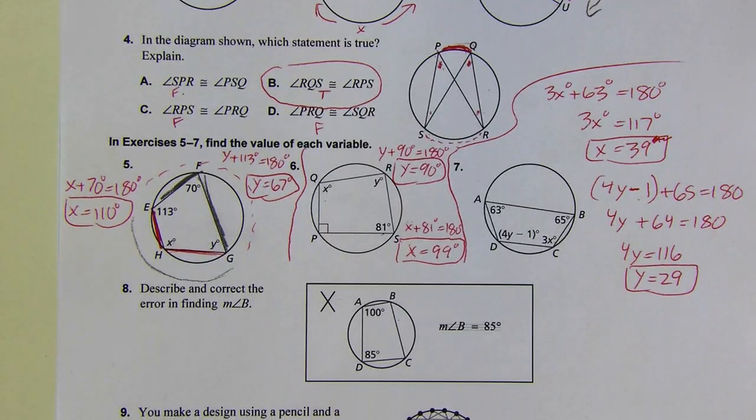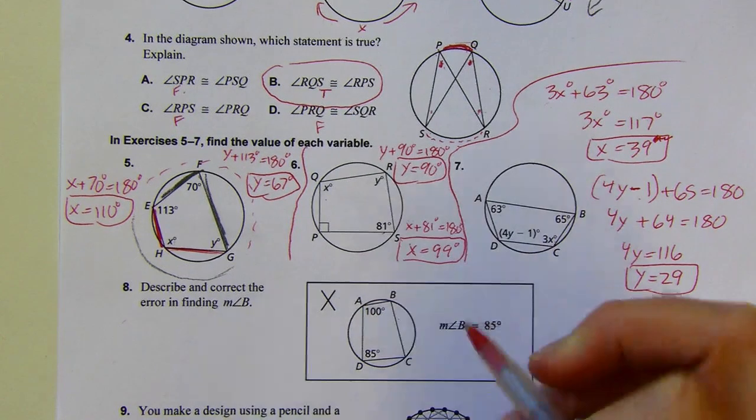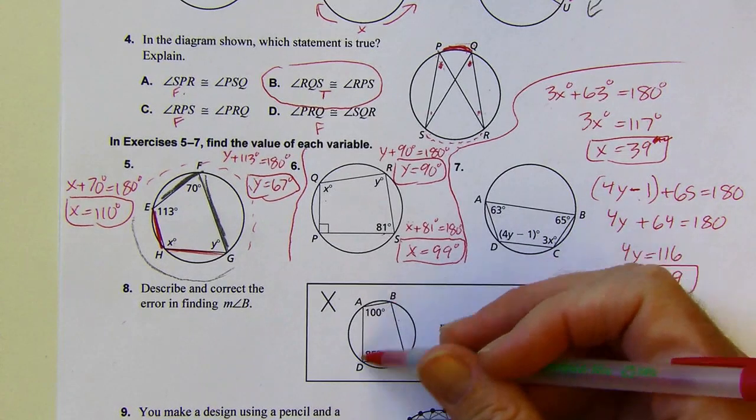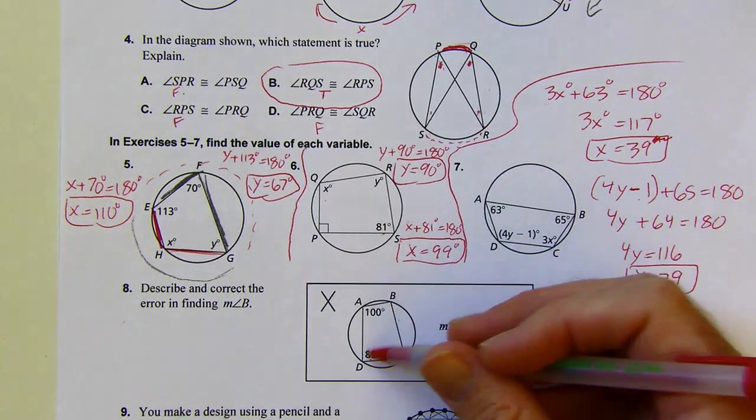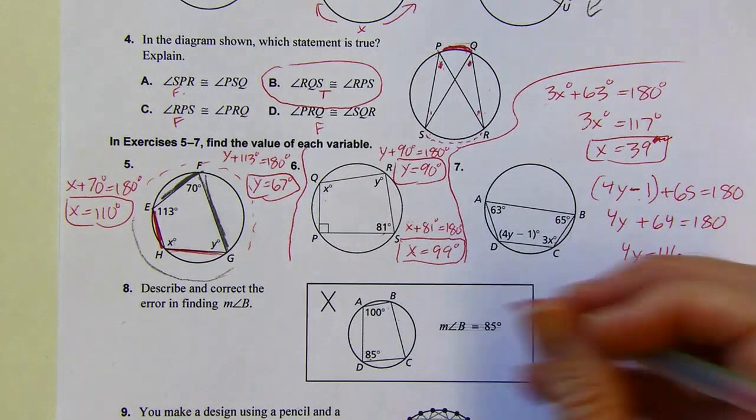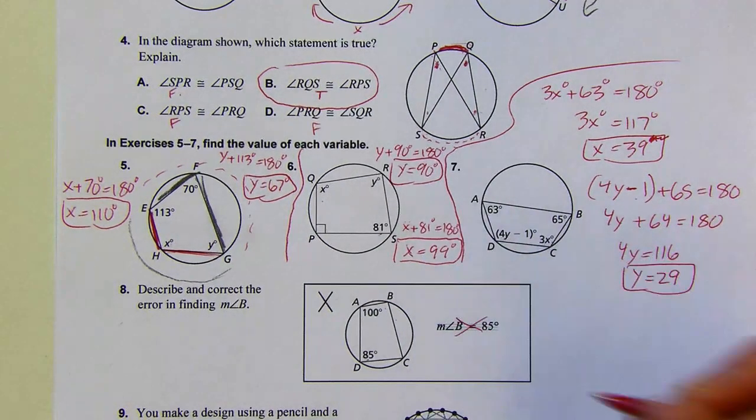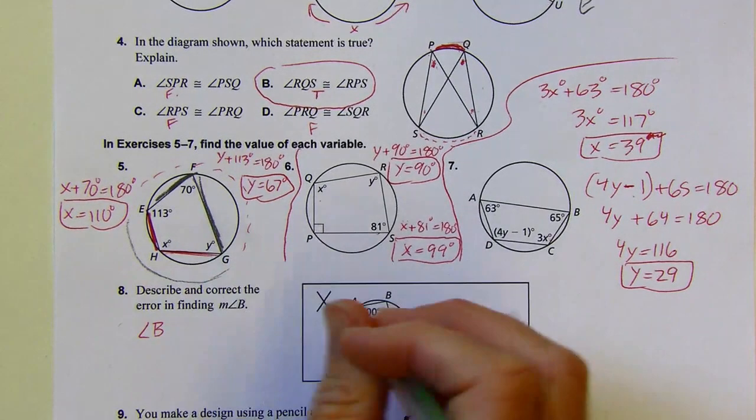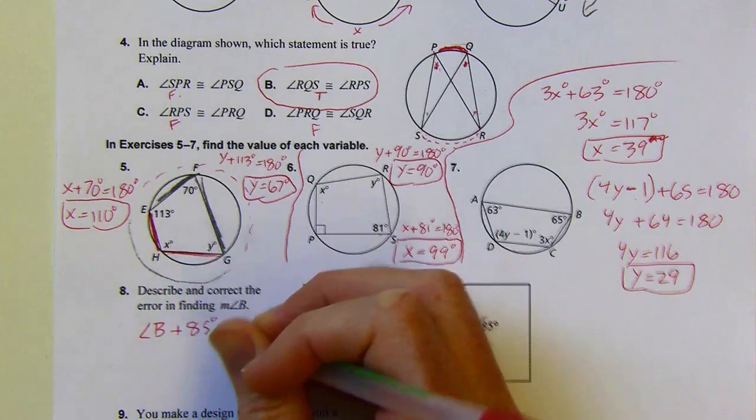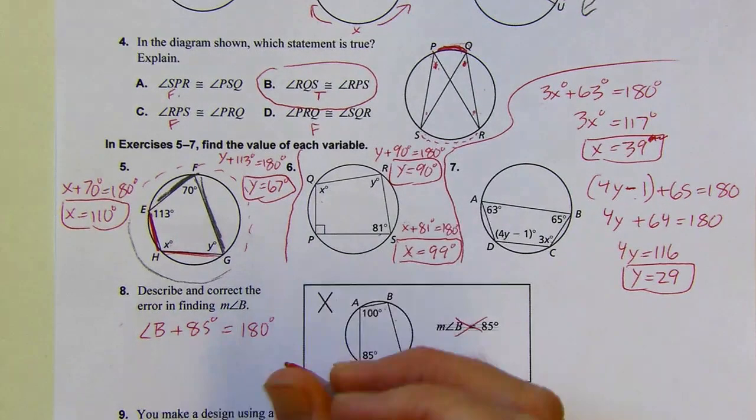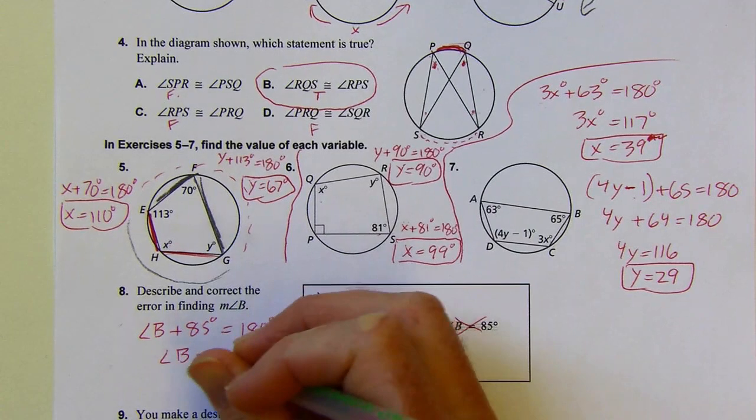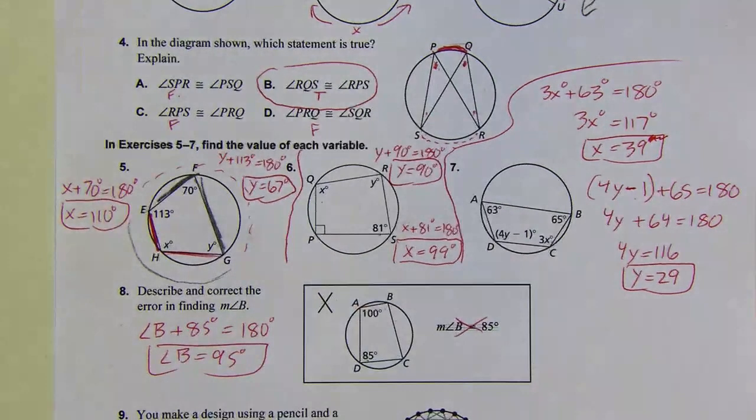All right, next problem. We're looking for a mistake. Error in finding the measure of angle B. Easiest way to do that is that they're going to be supplementary. So they just said that those opposite angles are congruent. That's just false, right? That's not true. So what you want to do instead, opposite angles are supplementary. So they should have done 180 degrees instead of saying they're congruent. Then I subtract 85, so that's going to be 95 degrees.